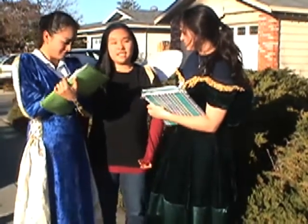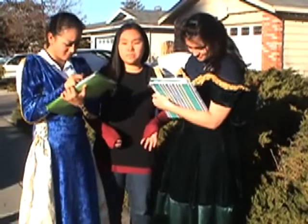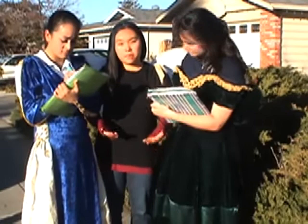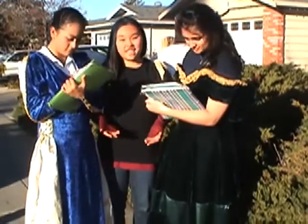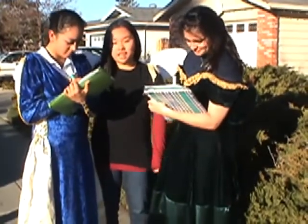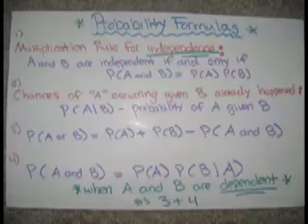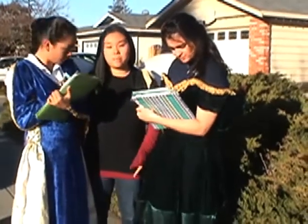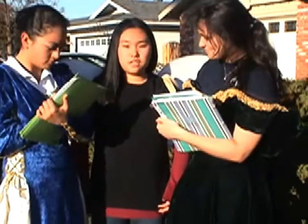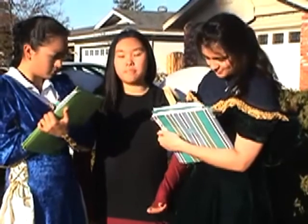An example is if I pull out a jack from a deck of cards given that I've already drawn a king — it's the probability of a jack and king over the probability of a king. The third formula is P(A or B) = P(A) + P(B) − P(A and B). The fourth formula is P(A and B) = P(A) × P(B|A). You use the third and fourth rules when A and B are dependent.